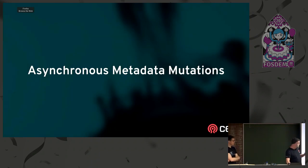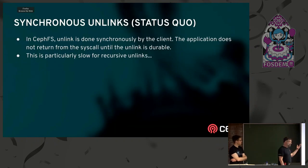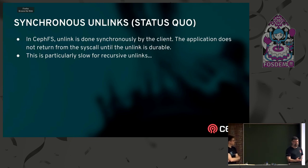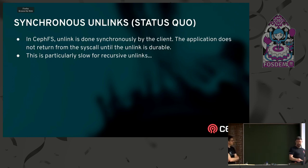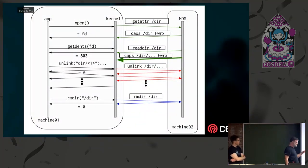Now let's talk about doing actual asynchronous operations. What happens today is pretty typical — similar to NFS or SMB. When someone calls unlink down into the kernel, we dispatch a call to the MDS synchronously and have to wait for the reply to come in before returning to user land. This can be really slow — think about doing an rm -rf on a directory: we do a readdir to find out what's in there, then issue an unlink on each file, each of which is a round trip. Here's a diagram showing the procedure for a synchronous unlink: we open the directory, get capabilities, do a readdir to learn all the dentries, then do unlink calls one by one, waiting for each reply before issuing the next, and finally do the rmdir.